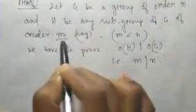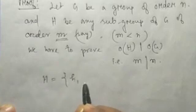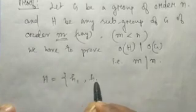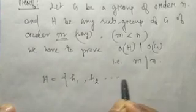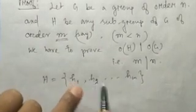Since the order of H equals m, H has m elements. Let these elements be named S1, S2, up to Sm. These elements S1, S2, S3 cannot be equal to each other.